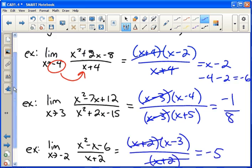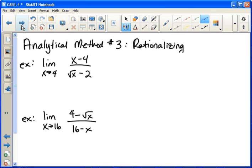So the next method is called rationalizing or rationalization. The thing that you know, that helps you know that this is the method you want to use is when you have square roots. If you look at the previous four examples, none of them had square roots. But both of these here do.